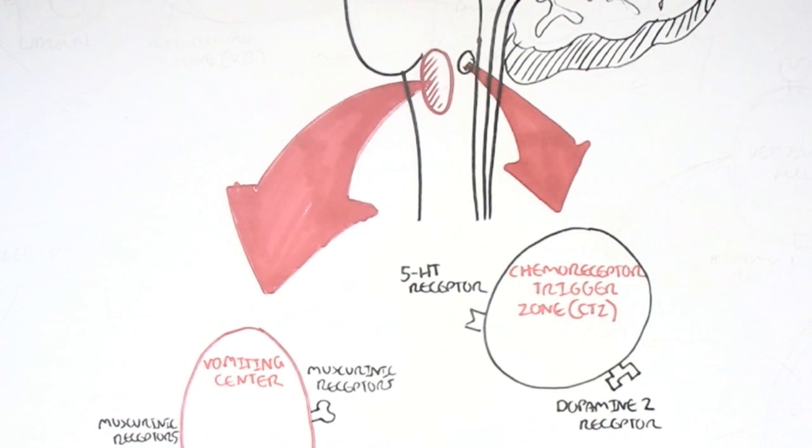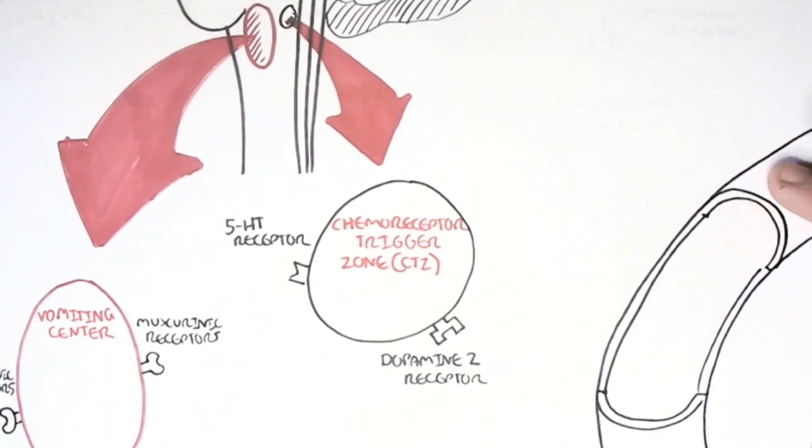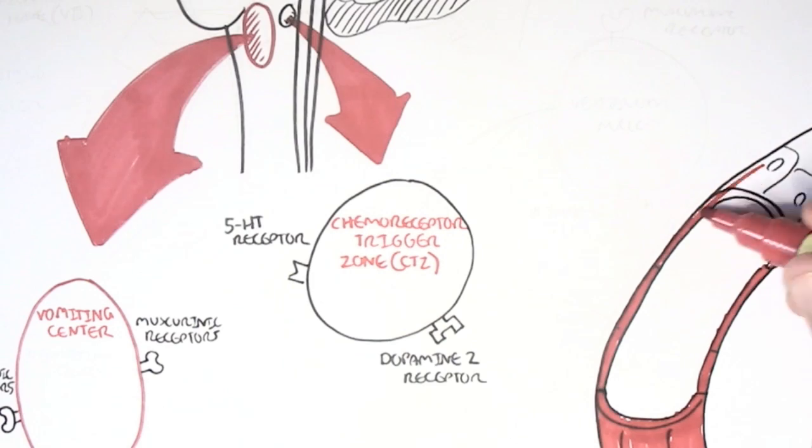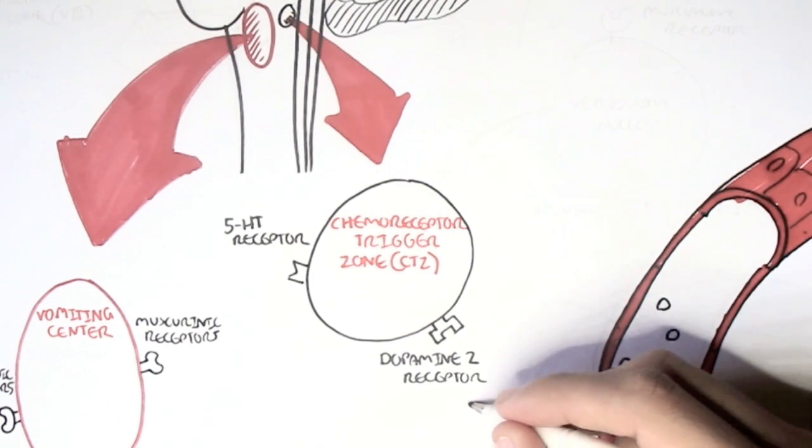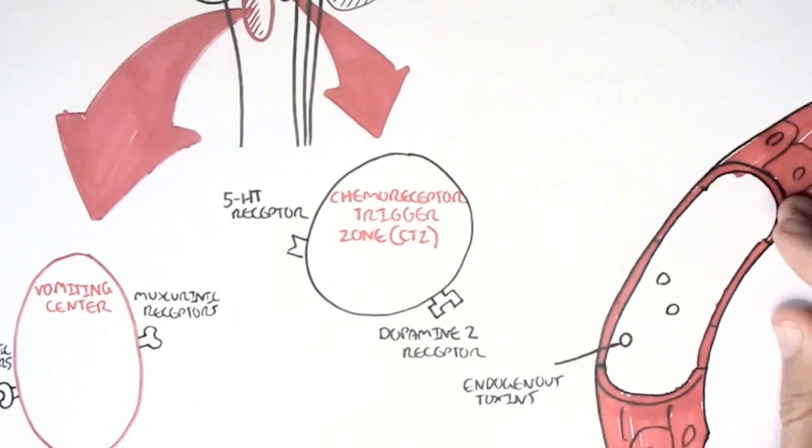Though the chemoreceptor trigger zone is located in the medulla, like the vomiting center, it is actually located conveniently outside the blood-brain barrier, which is a normal barrier to prevent circulating substances in the blood from making contact with the brain and areas of the brainstem. And so the chemoreceptor trigger zone lies outside the blood-brain barrier, and is thus more permeable to circulating substances.